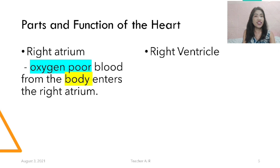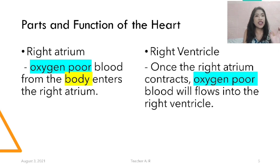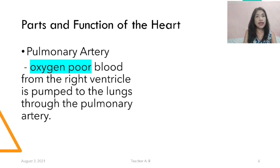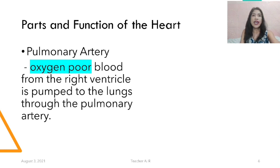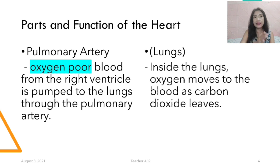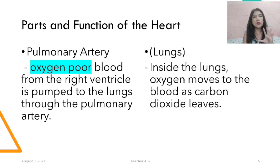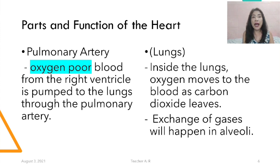The right ventricle — once the right atrium contracts, the oxygen-poor blood will flow into the right ventricle. In the pulmonary artery, it's oxygen-poor blood or unoxygenated blood from the right ventricle that is pumped to the lungs through the pulmonary artery. After that, there will be an exchange of gases inside the lungs — lungs is not a part of the circulatory system. Inside the lungs, oxygen moves to the blood as carbon dioxide leaves, and the exchange of gases happens in the alveoli.